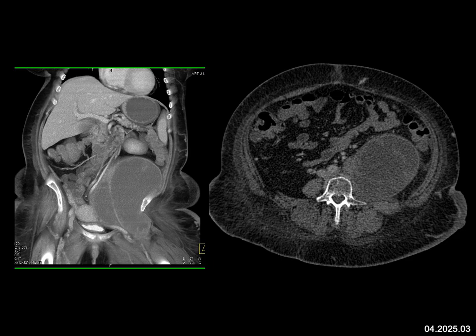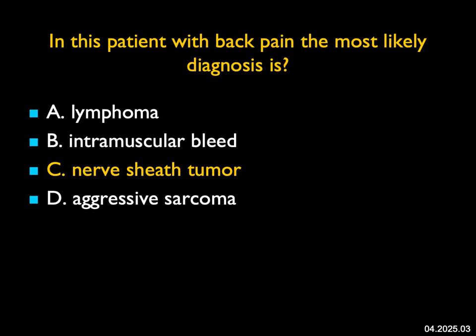Although few of these answers are possibilities and I can't definitely exclude them, the most likely answer is a neurogenic tumor or nerve sheath tumor. The posterior aspect of the abdomen is the best location for neurogenic tumors. Remember, in the chest, neurogenic tumors are also best seen posteriorly by the spine, but not always.